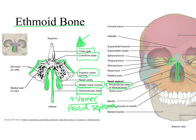Another thing we can see in this picture are air spaces within the ethmoid bone called ethmoid air cells. These air spaces make the ethmoid bone a very good example of a pneumatized bone.